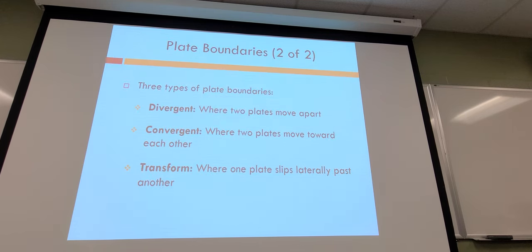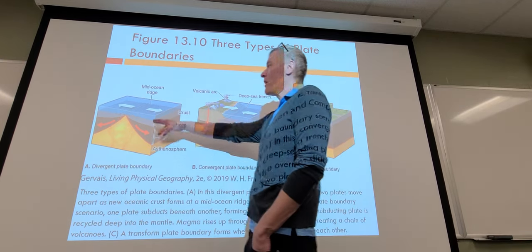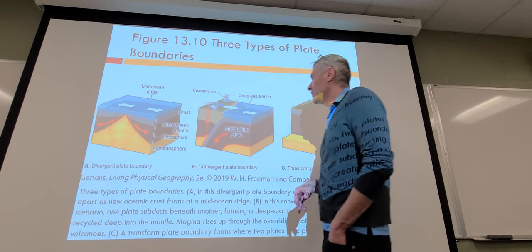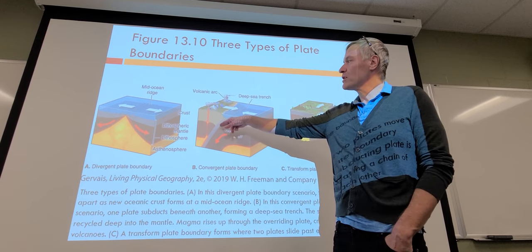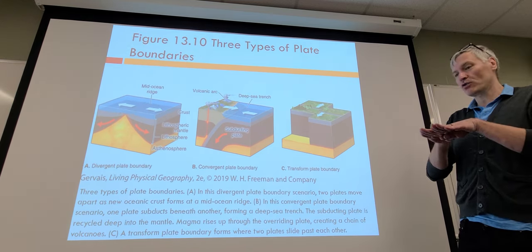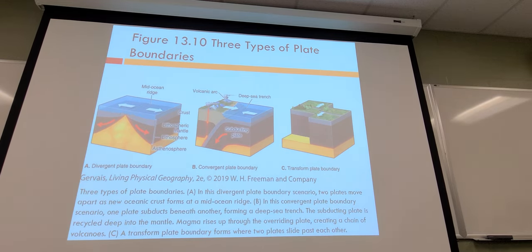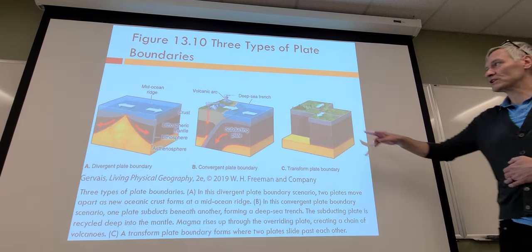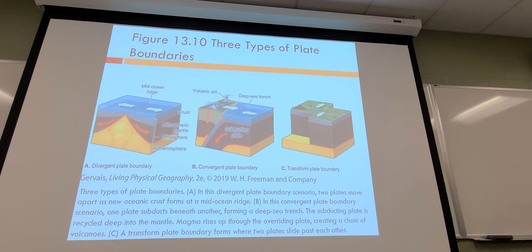Plate boundary landforms depend on which type of boundary it is. We have mountain chains where we have a ridge separating off. Subduction zones very often cause volcanoes and deep sea trenches — that's how we recognize them. Then you have transform boundaries, with the San Andreas Fault being a big example, where plates go side by side. Our evidence for these is usually man-made landforms that get disrupted in the process.